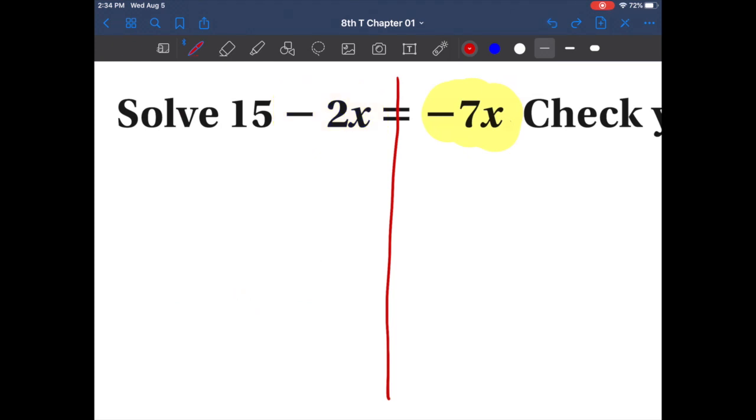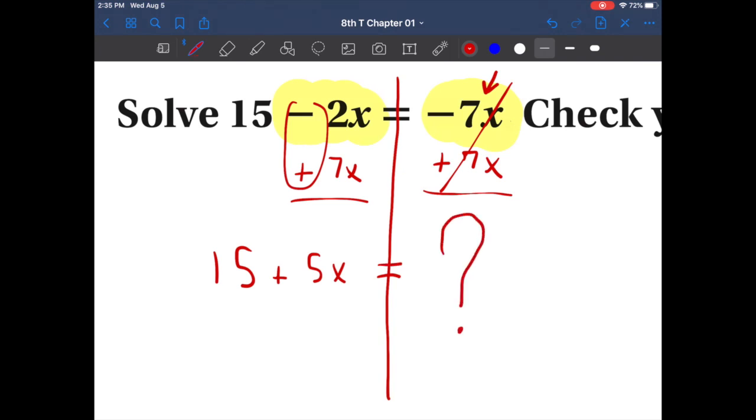I'm going to give you guys the wrong way to do it. Let's say we want to get rid of this, that would be plus 7x and cross that off. Then we would do plus 7x and now we would have 15. These are different signs, so subtract. Plus 5x, here's my equal sign, and then here's the big question: what would it equal?